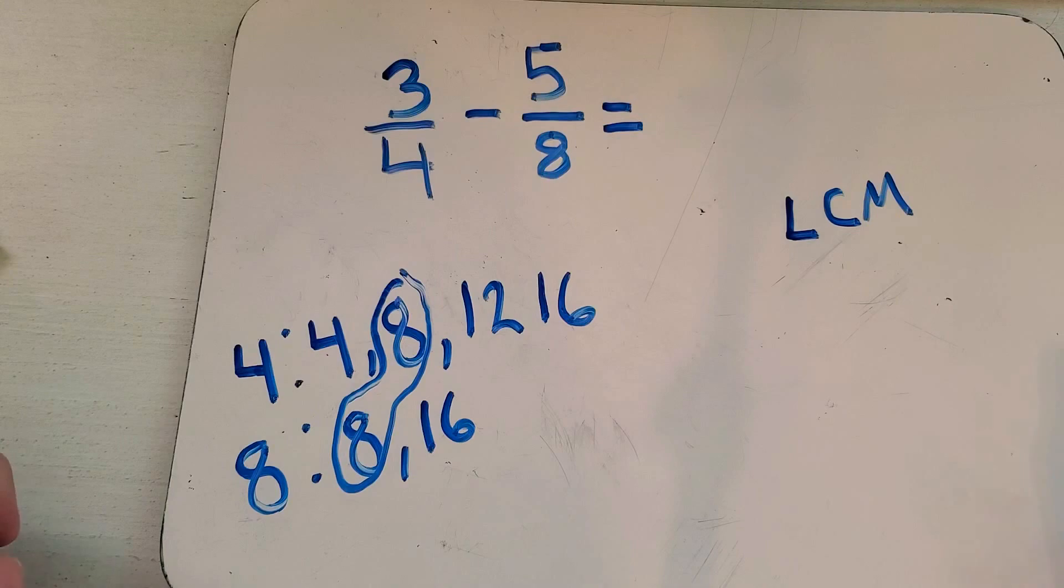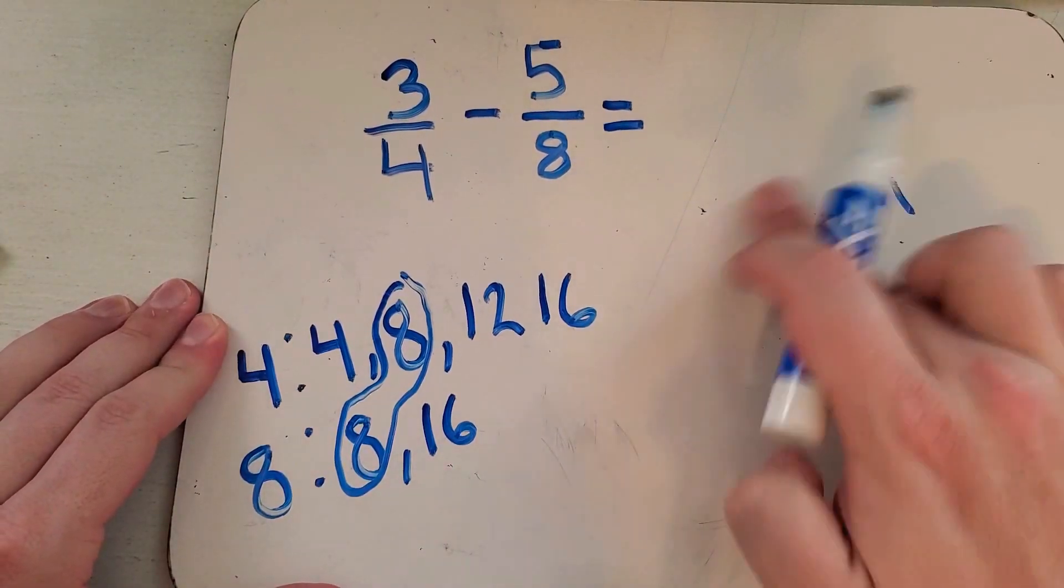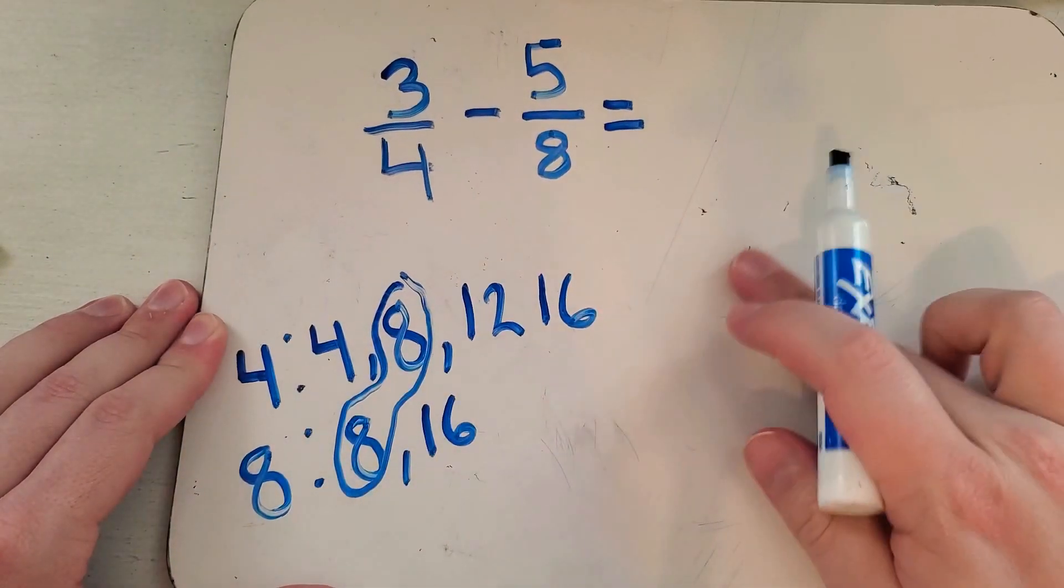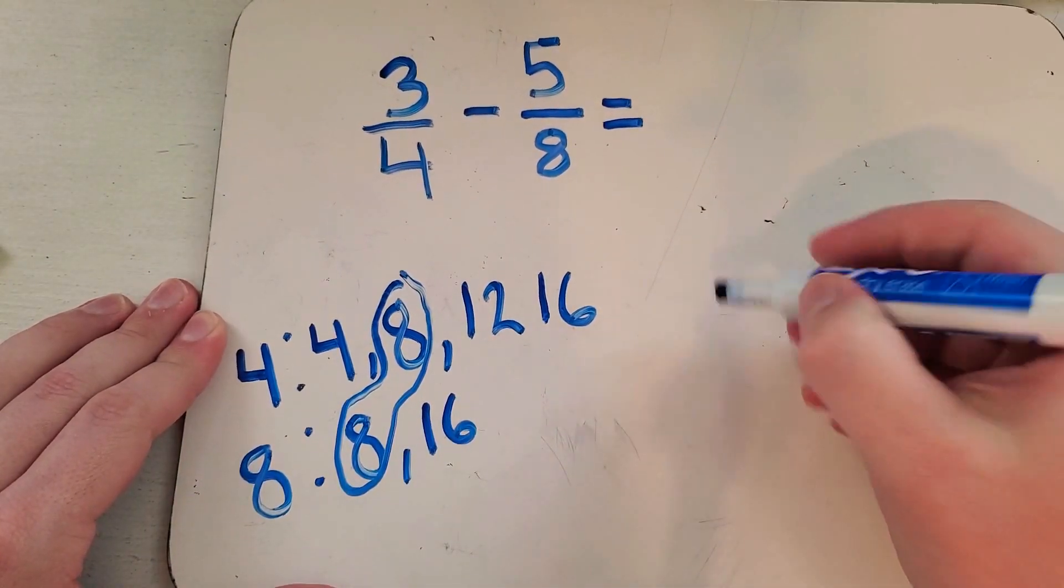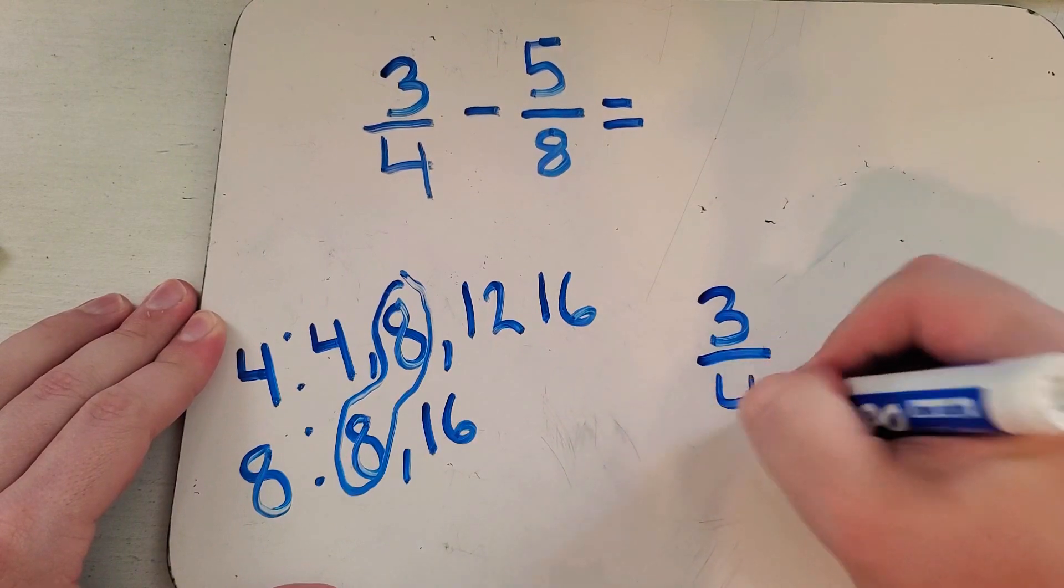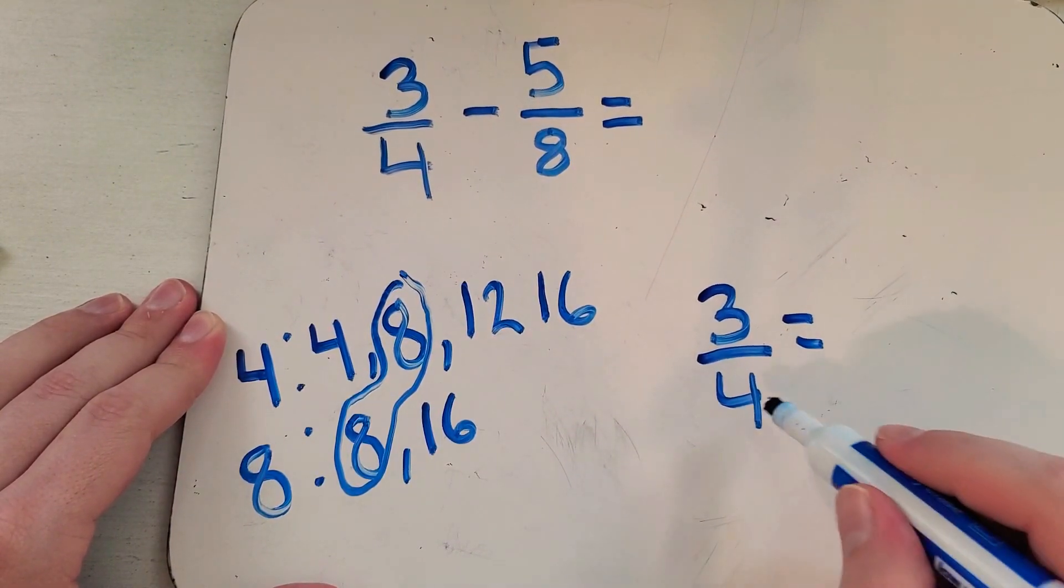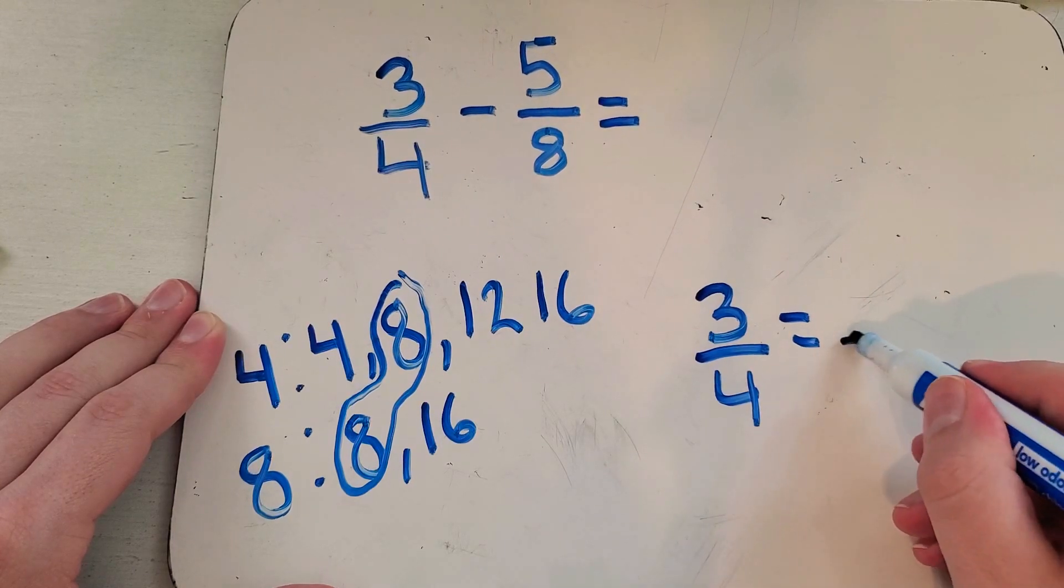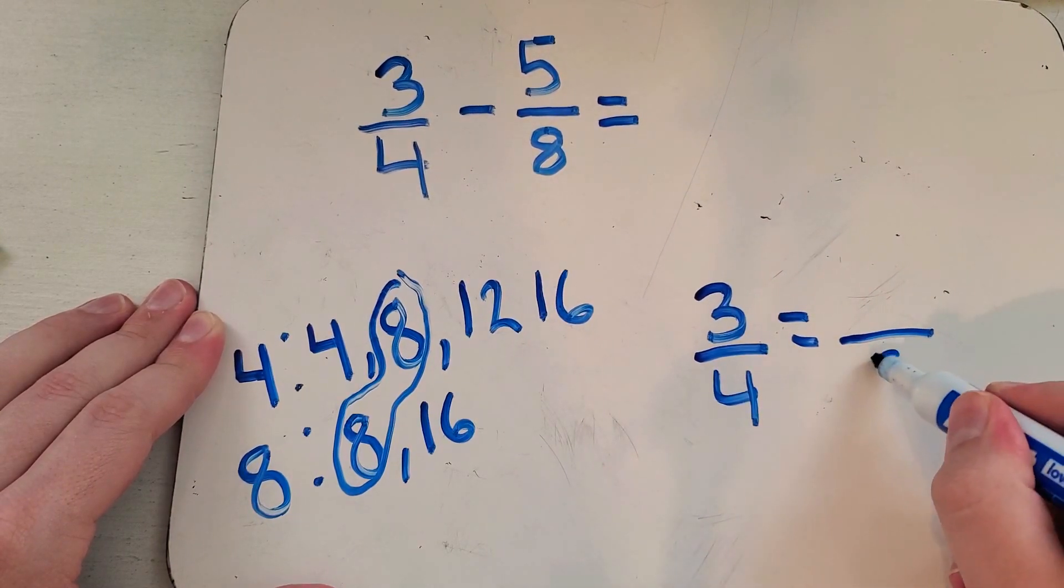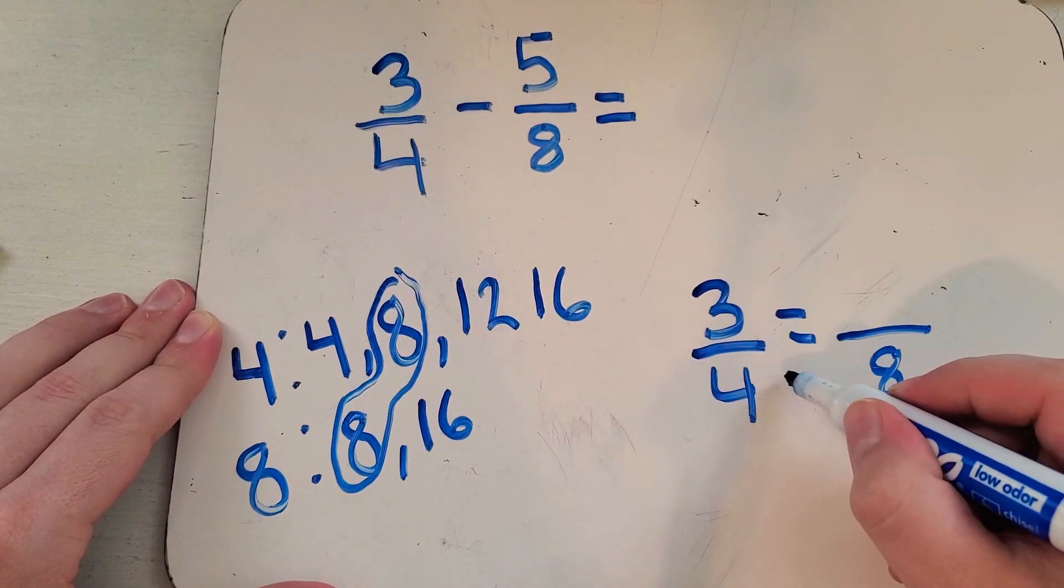So the way I do that is by multiplying. I'm going to change three fourths into something that I can use. I gotta ask myself what fraction would be equal to three fourths where the denominator is eight. So if I want my denominator to equal eight, I do that by multiplying four times two. Four times two is eight.